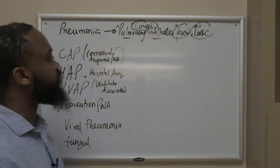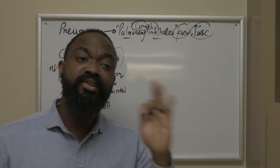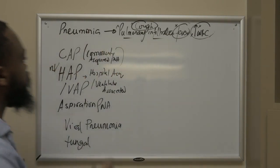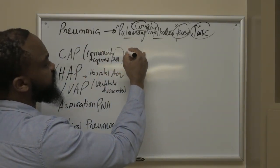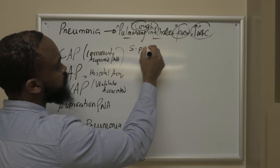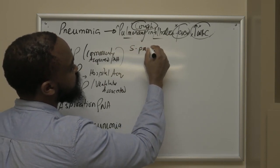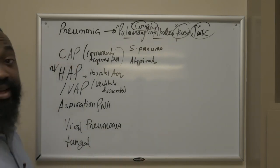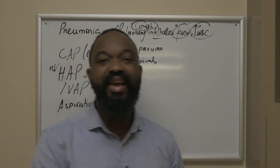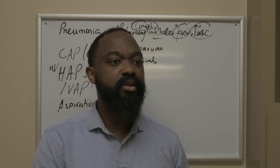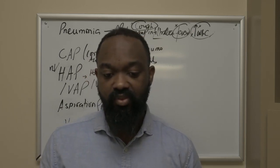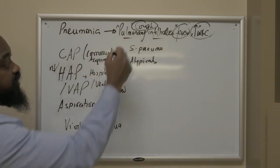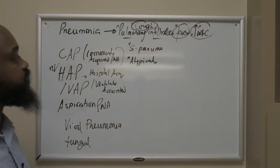Going back to community-acquired pneumonia: with infectious disease processes, you always ask first what are the most commonly isolated organisms. For community-acquired pneumonia, we're talking about Strep pneumo and the atypicals. This patient hasn't had any recent hospital contact, they're coming from the community, they have decreased risk of multi-drug resistant organisms or more serious organisms. These are the organisms we focus on in community-acquired pneumonia.